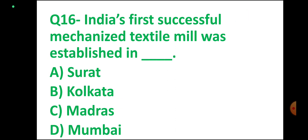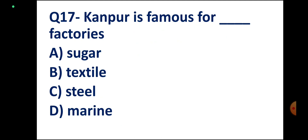Question number 16. India's first successful mechanized textile mill was established in — Surat, Kolkata, Madras, Mumbai. Correct option: Mumbai.